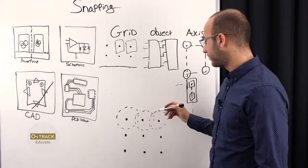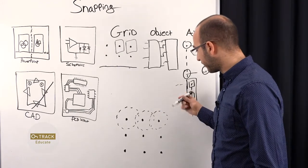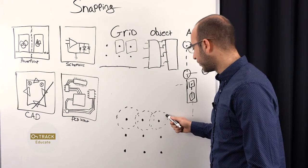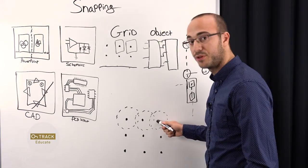So let's say we move our cursor from this side here and we hit this snapping area. Once we hit this border, we'll snap to the grid.